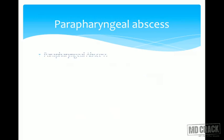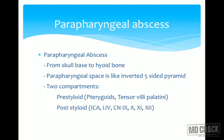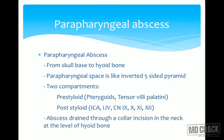Parapharyngeal abscess: the parapharyngeal space extends from the skull base to the hyoid bone only — not to the bifurcation of the trachea like retropharyngeal. It is like an inverted five-sided pyramid with two compartments: the pre-styloid (containing mainly muscles like pterygoids and tensor veli palatini) and the post-styloid (containing the neurovascular bundle — internal carotid artery, internal jugular vein, and cranial nerves 9th, 10th, 11th, and 12th). The abscess is drained via a collar incision in the neck at the level of the hyoid bone.